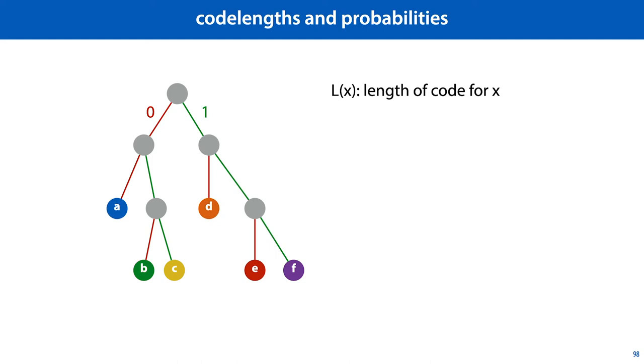Let's call the length of the code that a particular tree assigns to outcome x, L of x. Then we see that the probability of x is 1 half times 1 half times 1 half for as many times as we have to flip the coin to get to that outcome. In other words, 1 half to the power of the length of the code, which we can rewrite to 2 to the power of minus the length of the code. So this tells us, given the length of the code, what's the probability?